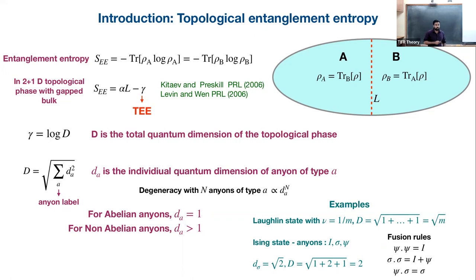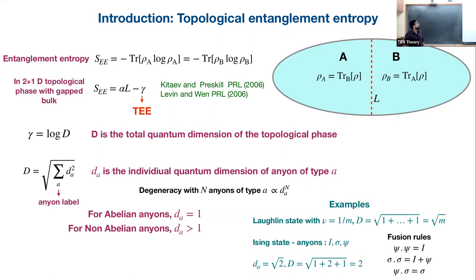Is this specific to 2+1 dimensions? Yes, I am only considering 2+1. This theory works for 2+1. This definition and the scaling with respect to L are two-dimensional. I understand — but this D going like that is also a two-dimensional concept. I always see these anyons only in two dimensions. It's like the orienting shape of topological order.